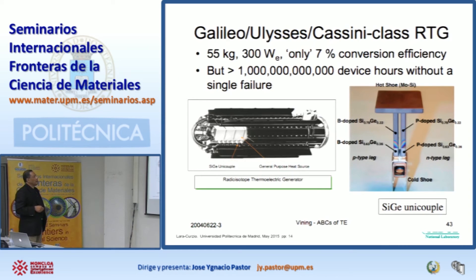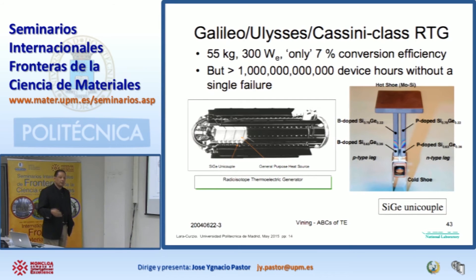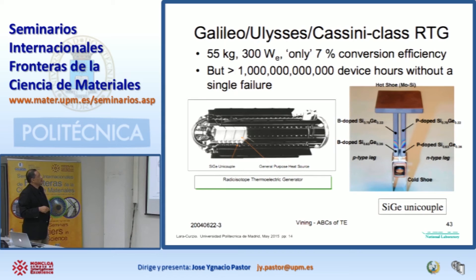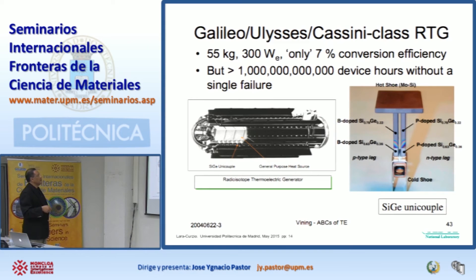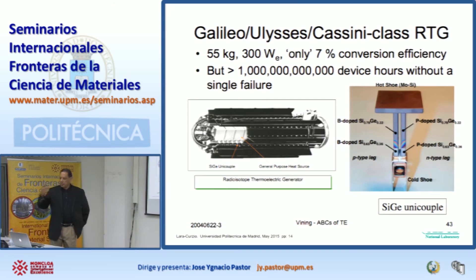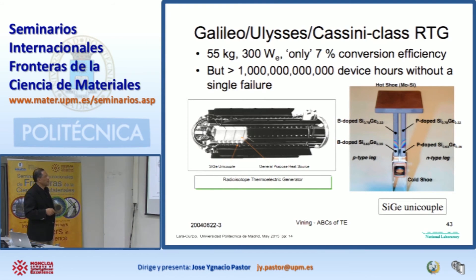The one currently flying through Saturn is Cassini — if you have not seen those pictures, they are probably some of the most spectacular you will ever see. To give you an idea, it produces 300 watts of electricity, and that's only 7% conversion efficiency — these materials are not very efficient. What's remarkable about these materials is that there are truly no moving parts. In a turbine, things rotate at 100,000 RPMs; in an internal combustion engine, you have pistons going up and down. These things don't move. However, we have to be aware that there are temperature gradients, and every time you have a temperature gradient, you're going to have a stress.